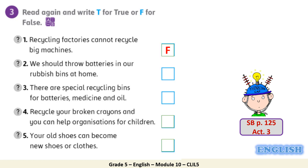Welcome back. Number 2: We should throw batteries in our rubbish bins at home. It is false. Why? Because they contain harmful chemicals. Excellent. Number 3: There are special recycling bins for batteries, medicine, and oil. True. Very good. Number 4: Recycle your broken crayons and you can help organizations for children. True. Number 5: Your old shoes can become new shoes or clothes. This is also true. Very good.